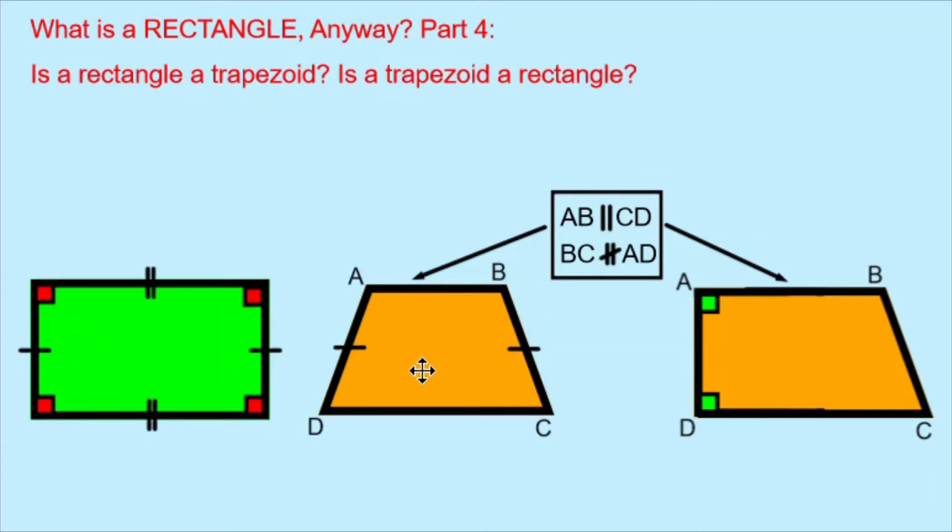In orange, I have two trapezoids, an isosceles trapezoid and a right trapezoid. In the isosceles trapezoid, sides AD and BC are equal in length, as shown by the little lines, and there are no internal 90-degree angles. In the right trapezoid, none of the sides are shown as being equal in length, and there are two internal 90-degree angles.